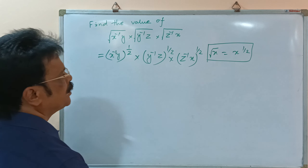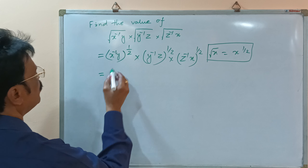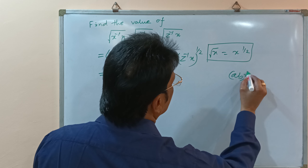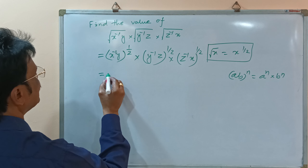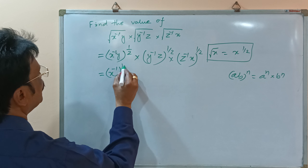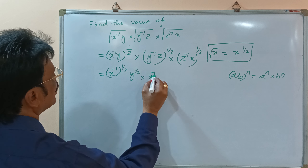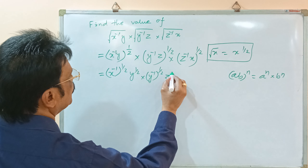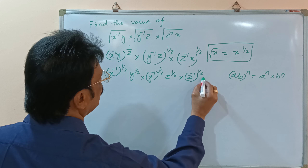This is the formula. Now we know that (ab) to the power n is equal to a to the power n into b to the power n. Similarly we can apply this here: x to the power minus 1 whole to the power half, into y to the power half, into y to the power minus 1 whole to the power half, into z to the power half, into z to the power minus 1 whole to the power half, into x to the power half.